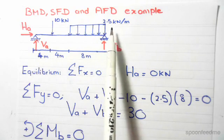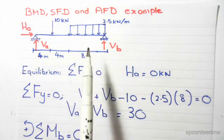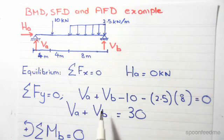We have to convert the 2.5kN per meter UDL into a point load. So we multiply by its span, which becomes in terms of kilonewtons. And then rearranging, we end up with VA plus VB equals 30.